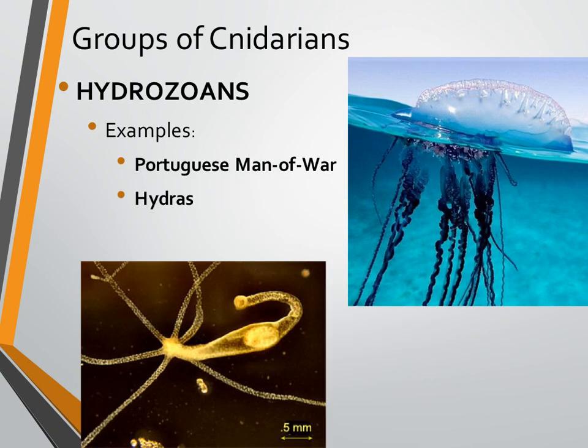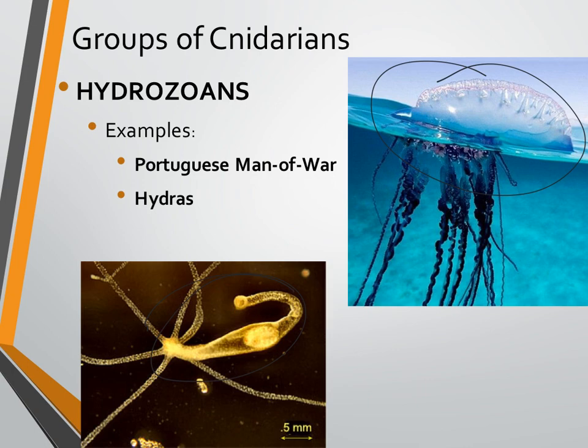There are three groups of Cnidarians, and these are going to be their classes. Hydrozoans are the first — these are Portuguese man-of-war and hydras. You can see this here is a Portuguese man-of-war, and here is a hydra. Hydras are really small — they are millimeters in size, so they are quite tiny.